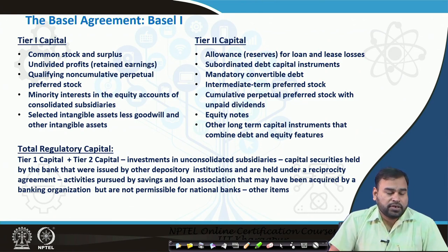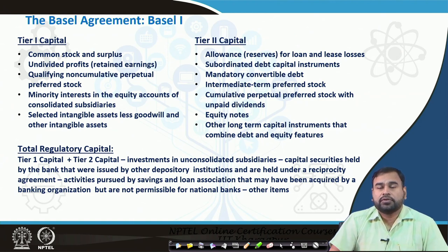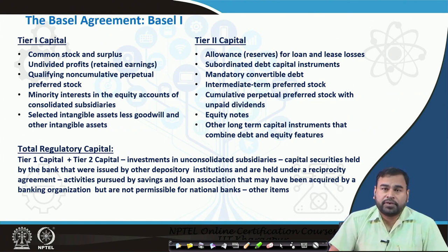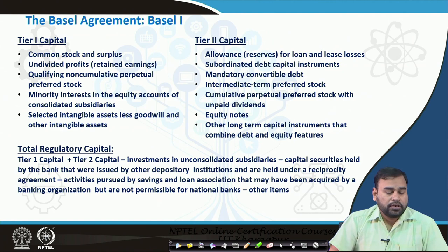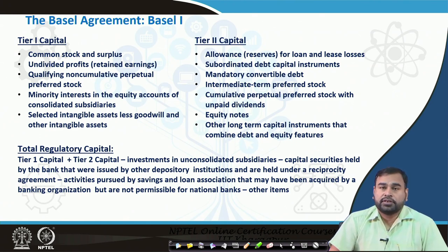There are various items under tier 1 and various items under tier 2. According to Basel 1, total capital is tier 1 plus tier 2 capital, minus some investments and deductions. Under tier 1 capital, we have common stock, retained earnings, non-cumulative perpetual preference shares, minority interest in equity accounts of consolidated subsidiaries, and selected intangible assets minus goodwill and other intangible assets.